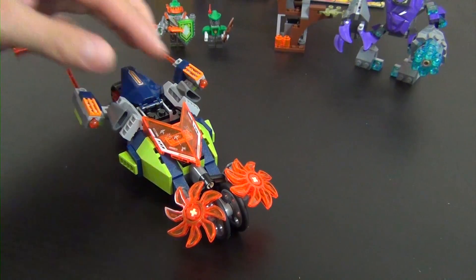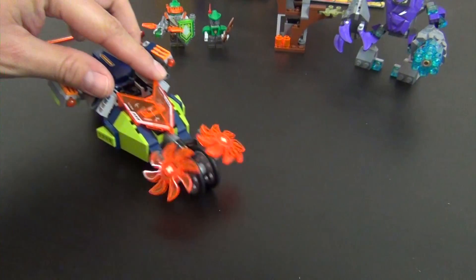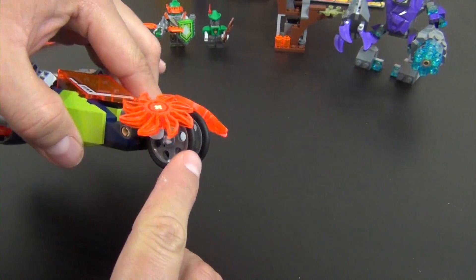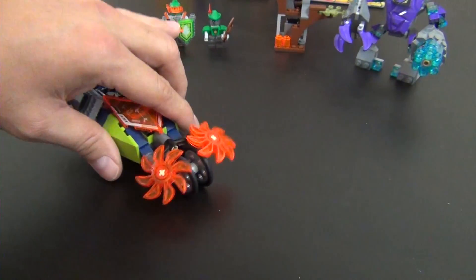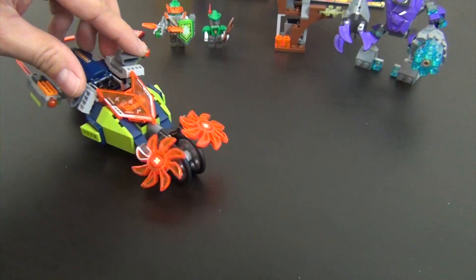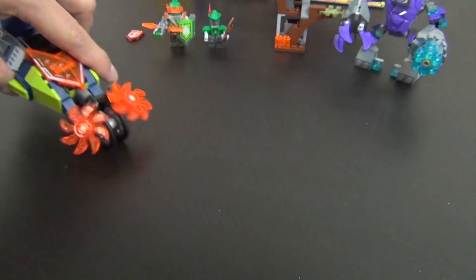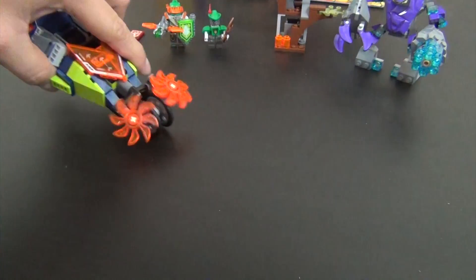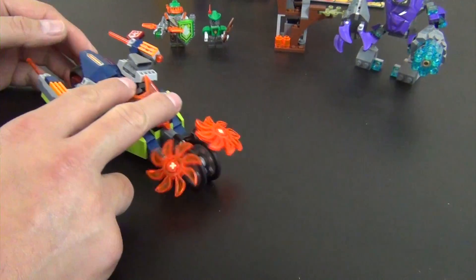So our little play feature is when you - see when you roll it - that little rubber, these little rubber wheels are pushing against the trans fluorescent orange blades and it's making them spin. So if it hits something, it'll destroy it.